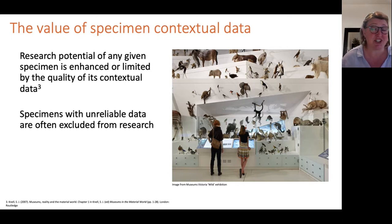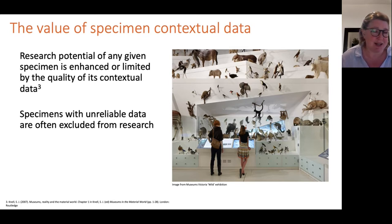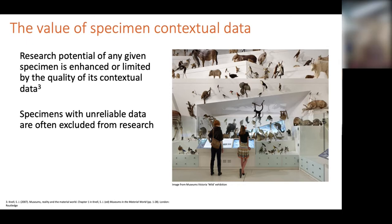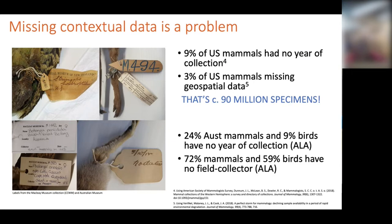For research, education and display, the value of each specimen is enhanced or limited by the quality of its contextual data. This typically includes the animal's location, habitat, date of collection, the field collector's name, and notes on any scientific testing done since it joined the museum collection. Museums with unreliable, inconsistent or missing data often have to be excluded from research, regardless of whether the specimen is rare or unique.